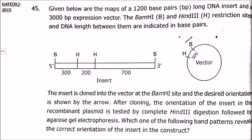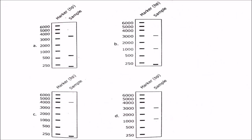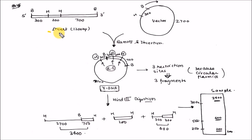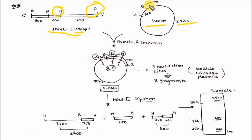This question came in the GATE Life Sciences 2015 paper. An insert of 1200 base pairs and a vector of 3000 base pairs are given. There is a HaeIII site and a BamHI site. If you ligate this insert into this vector in the given orientation, you will get a recombinant DNA. After BamHI there is 300 bp, then one HaeIII site, then after 200 bp another HaeIII site, then after 700 bp another BamHI site.